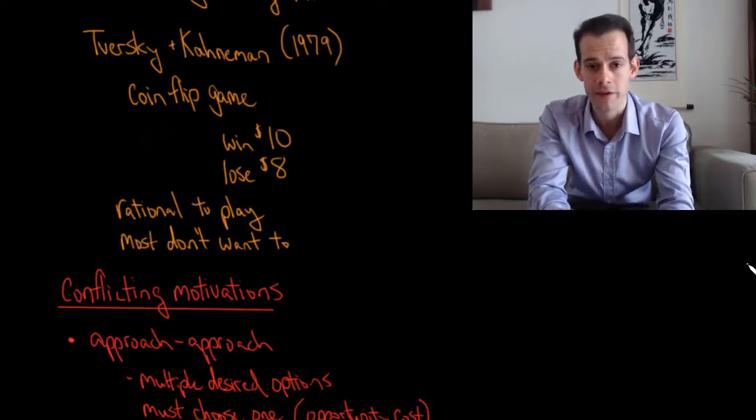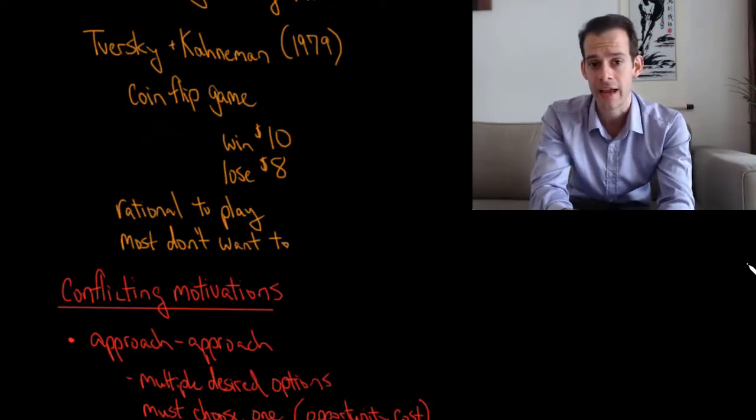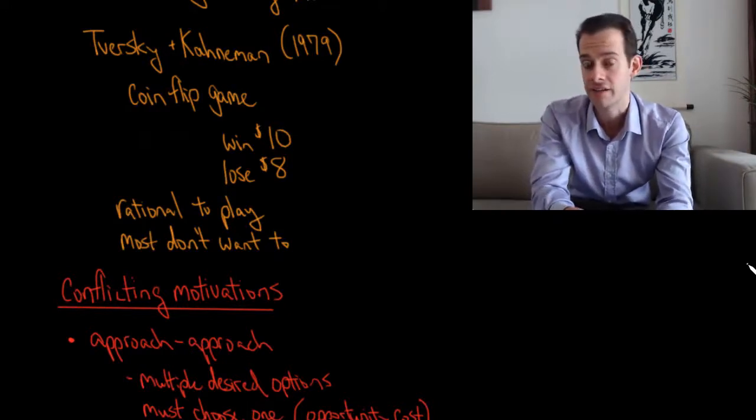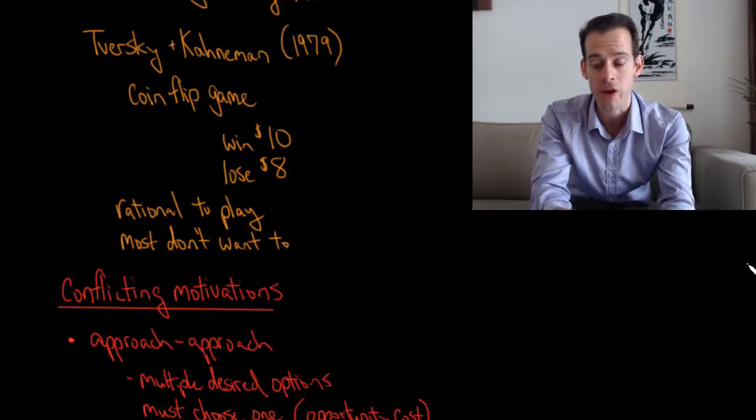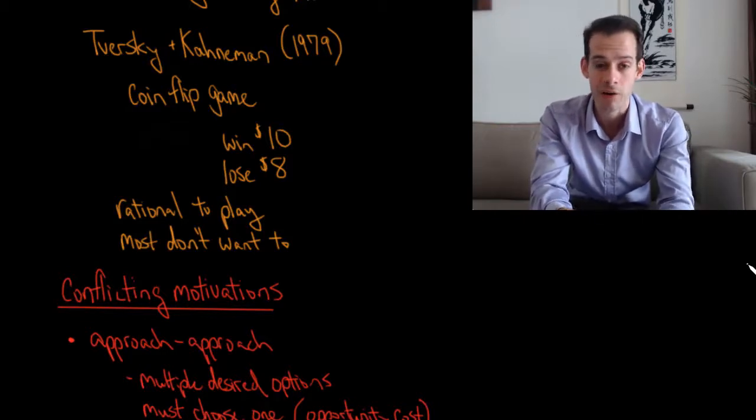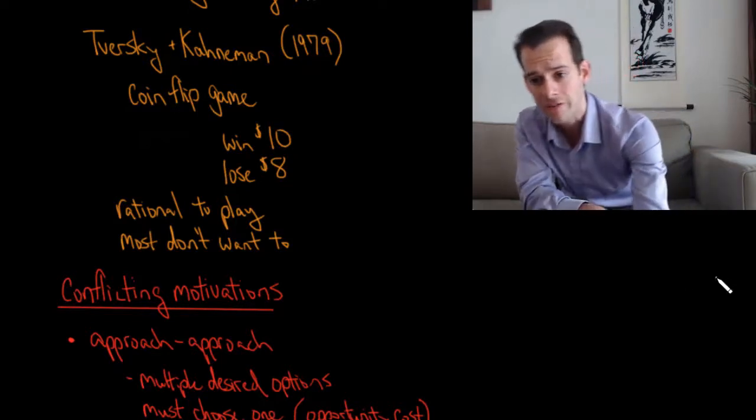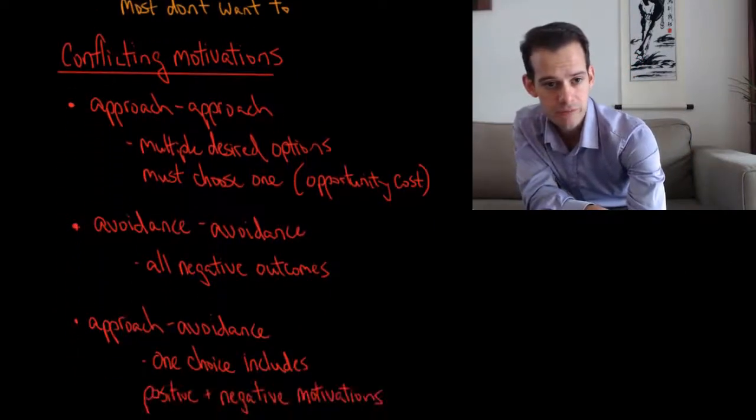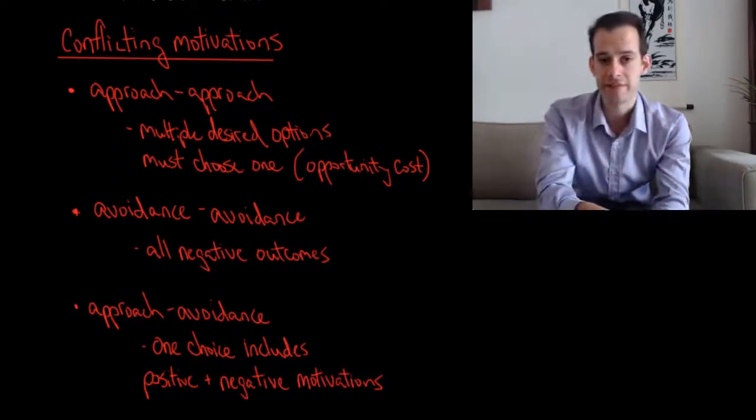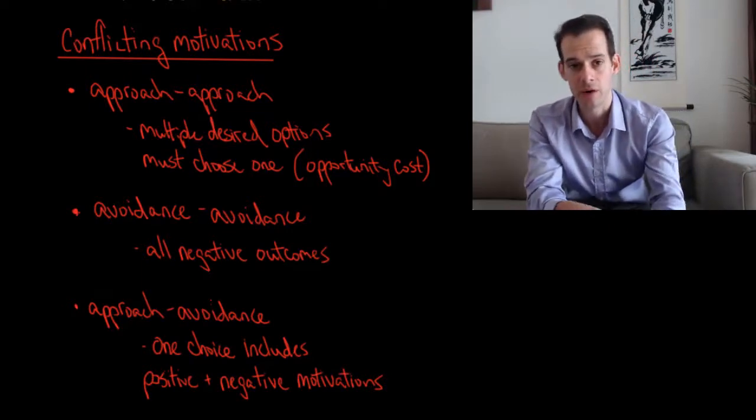This relates to some other things Tversky and Kahneman wrote about called prospect theory and also relates to things like the sunk cost fallacy. We can also think about how this influences our motivations and our approach or avoidance motivations. We also have conflict between these motivations.